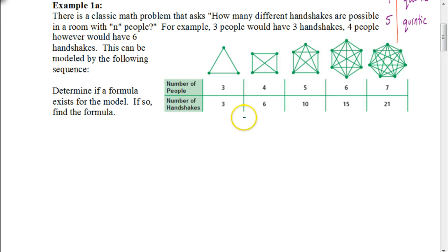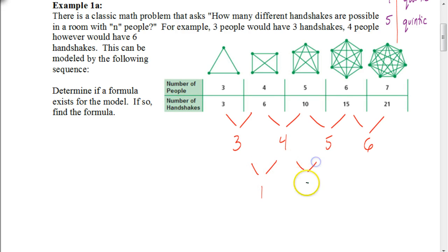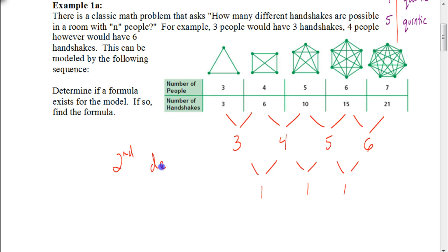Starting by finding the differences between each value: six minus three is three, ten minus six is four, fifteen minus ten is five, and twenty-one minus fifteen is six. These are not equal, so this is not a first-degree polynomial. We do this again: four minus three is one, five minus four is one, and six minus five is one. The fact that our second row of differences are all the same means this is a second-degree polynomial, or quadratic.